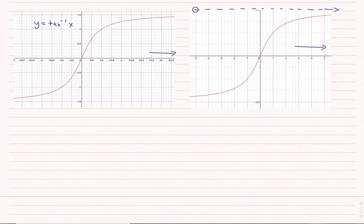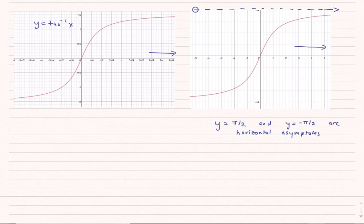So this is no longer a vertical asymptote — we're now talking about horizontal asymptotes. I can write this as y equals pi over 2 and y equals negative pi over 2 are horizontal asymptotes. But how do we come up with this when talking about limits?